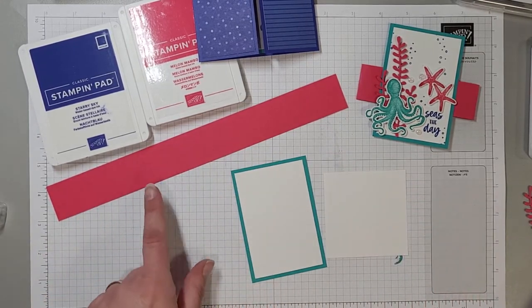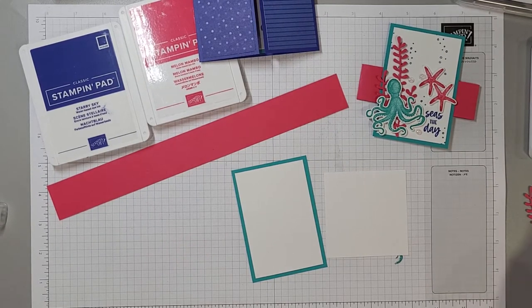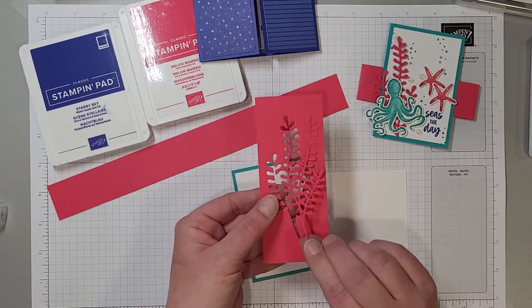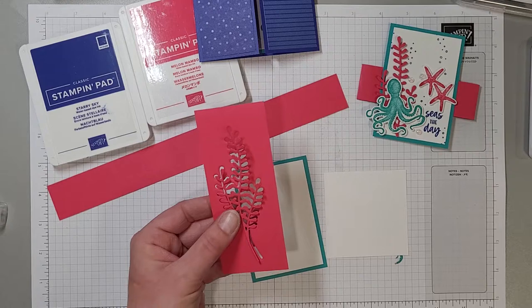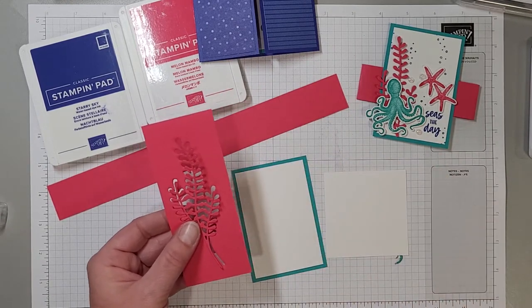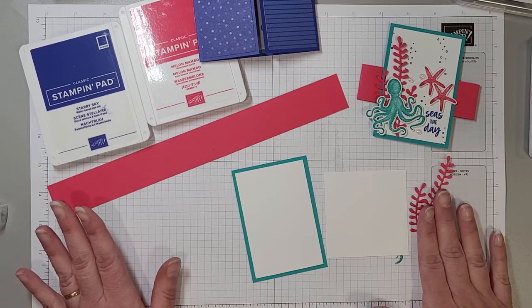Now you'll also need a scrap piece of Melon Mambo. I have gone ahead and pre-cut this beautiful foliage which is this gorgeous die here from the Seize the Day dies. I've done that ahead of time just to speed up the video so you'll want to run that through and cut one of those out from your dies as well.